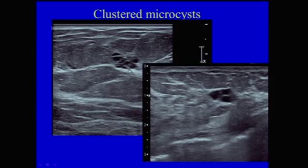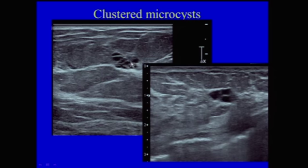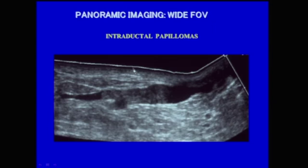Here's an example of clustered microcysts in perpendicular projections — a mass with multiple tiny cysts with thin septations and no solid components. It's very important to evaluate these carefully; if you see a solid component, biopsy is probably indicated. If there are only thin septations and no solid component, these are benign and don't need to be followed. For intraductal masses, panoramic imaging with wide field of view helped show the extent of this intraductal mass, which was a papilloma.